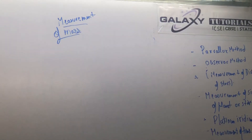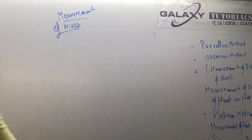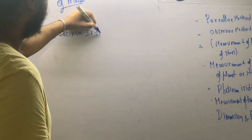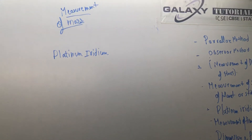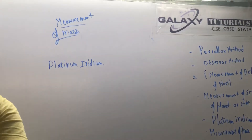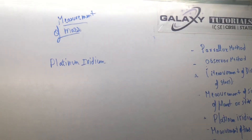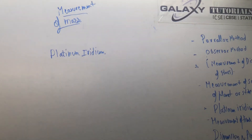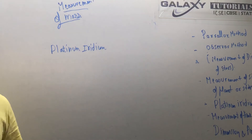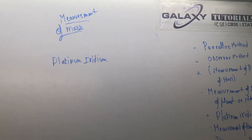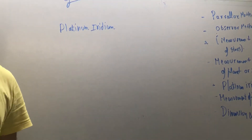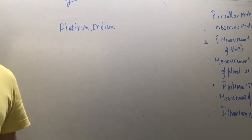Earlier, mass was measured using a platinum-iridium element as a standard. It was kept in a vacuum-like space and all masses were measured against it. However, it was observed that platinum-iridium tended to absorb moisture and dirt particles, which changed the standard — for example, a 1 kg reference would increase to 1.05 or 1.07 kg — making it inaccurate. So this method is no longer used.